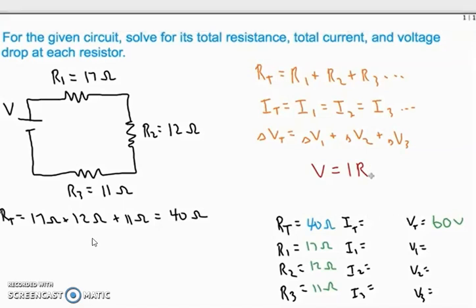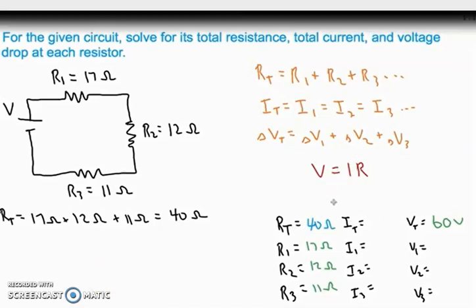Now we would like to calculate the individual voltages as well as individual currents using Ohm's law. We know that the total voltage equals sum of individual voltages, but before that we have to calculate IT. So IT can be calculated by using Ohm's law and it comes out to be 1.5 amperes.